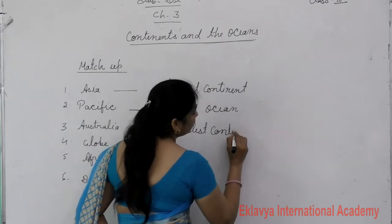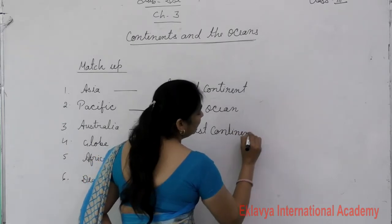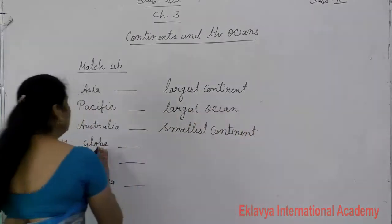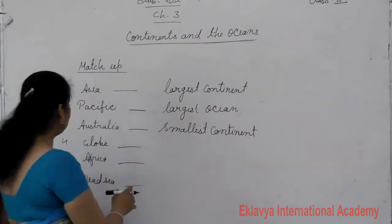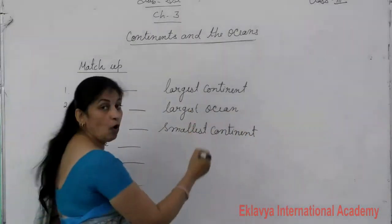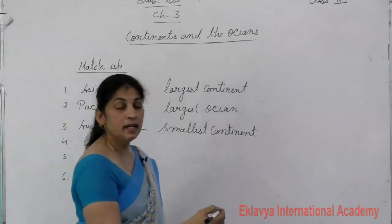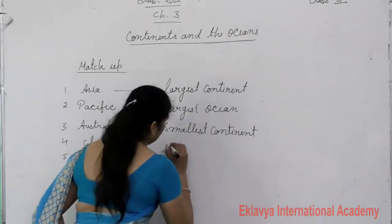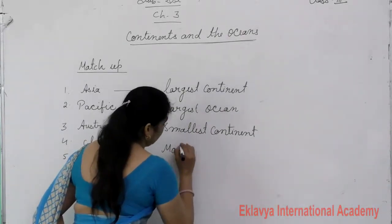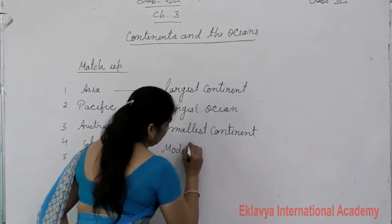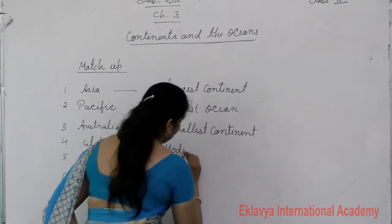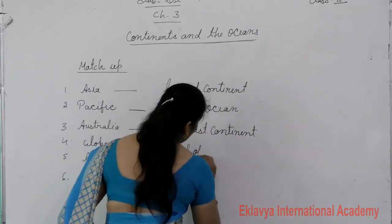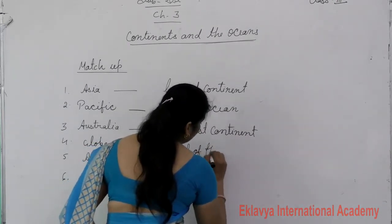Australia is the smallest continent. Next is the Globe. Globe is the model of the earth.